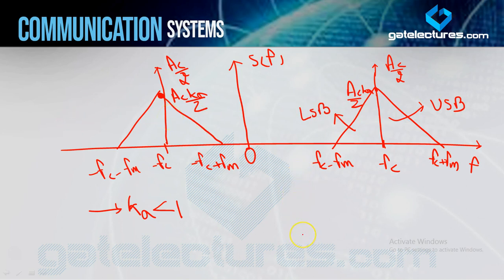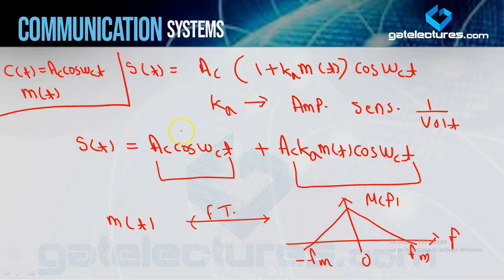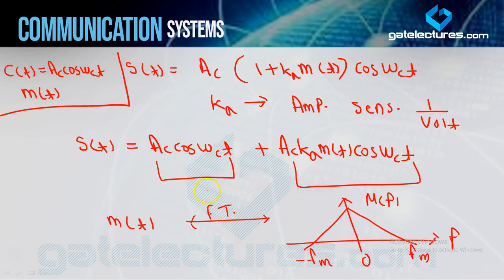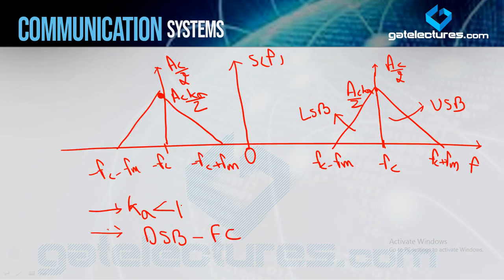If you look at the complete diagram carefully on the positive side: FC is the carrier frequency. The portion above FC is called the upper sideband, and the portion below FC is the lower sideband. The same applies on the negative side. This modulated signal spectrum has an upper sideband, a lower sideband, and an impulse at the carrier frequency — so this is called double sideband with full carrier.